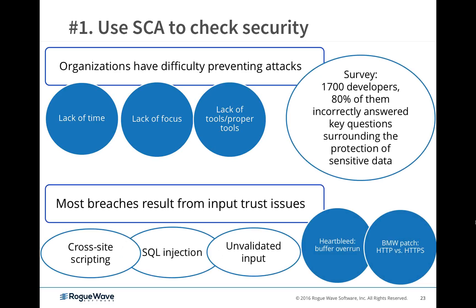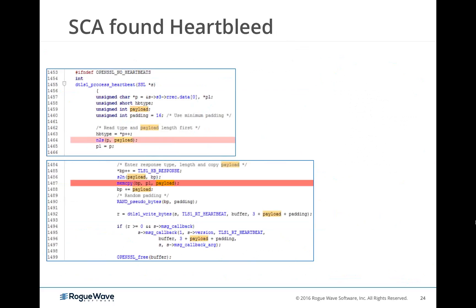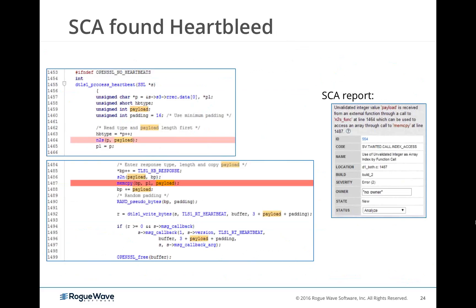They're responsible for doing it, but they're answering basic questions incorrectly and don't have the time, focus, or tooling to do it. It's no surprise that breaches keep happening. A lot of these breaches result from input trust issues — developers not being suspicious enough of input coming into their programs — leading to cross-site scripting, SQL injection, and unvalidated input issues that make worldwide news like Heartbleed. In the Heartbleed case specifically, a static code analysis tool would have very quickly found and explained the buffer overrun — that a particular value wasn't being checked before use, allowing a hacker to insert bad code.